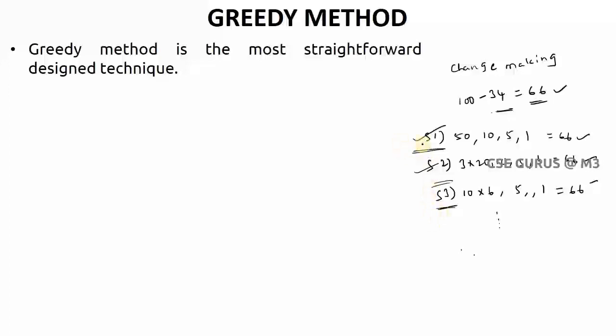If you observe here, each one is an acceptable solution. Here each solution you call it as feasible solution. You call here it as feasible solution.